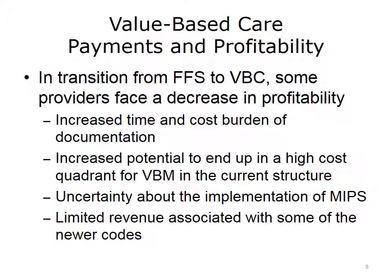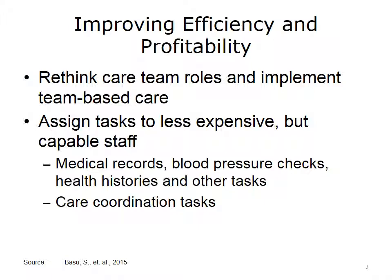Using the example of chronic care management, providers are currently allowed to bill only $42 per patient per month to perform these services. To provide this service at this level of reimbursement, clinics and hospitals need to create new workflows, new staffing roles, and new processes and procedures to improve efficiency and profitability.